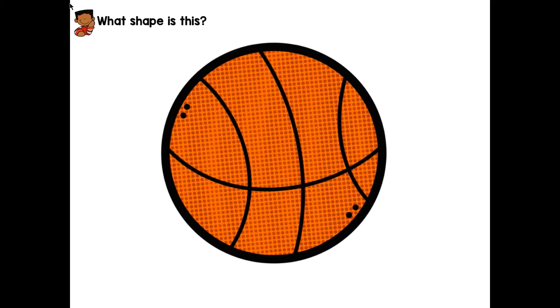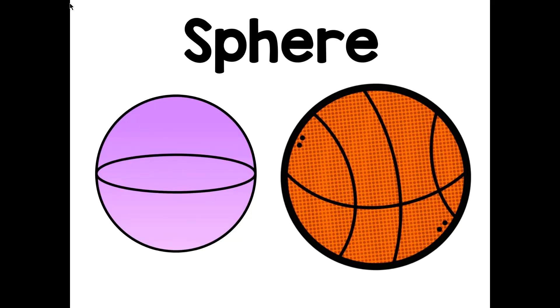This is a basketball. We might see this shape at the playground or during a basketball game. What shape is a basketball? Did you say sphere? If you did, you were right! Great job because that is a hard word to say.